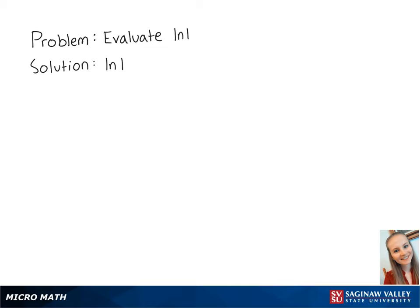For this problem, we want to evaluate the ln of 1. The ln of 1 is equal to the log base e of 1. Here we have to answer the question: e to what power equals 1? We know that e to the 0 power equals 1. Therefore, the ln of 1 equals 0. This is the final answer.